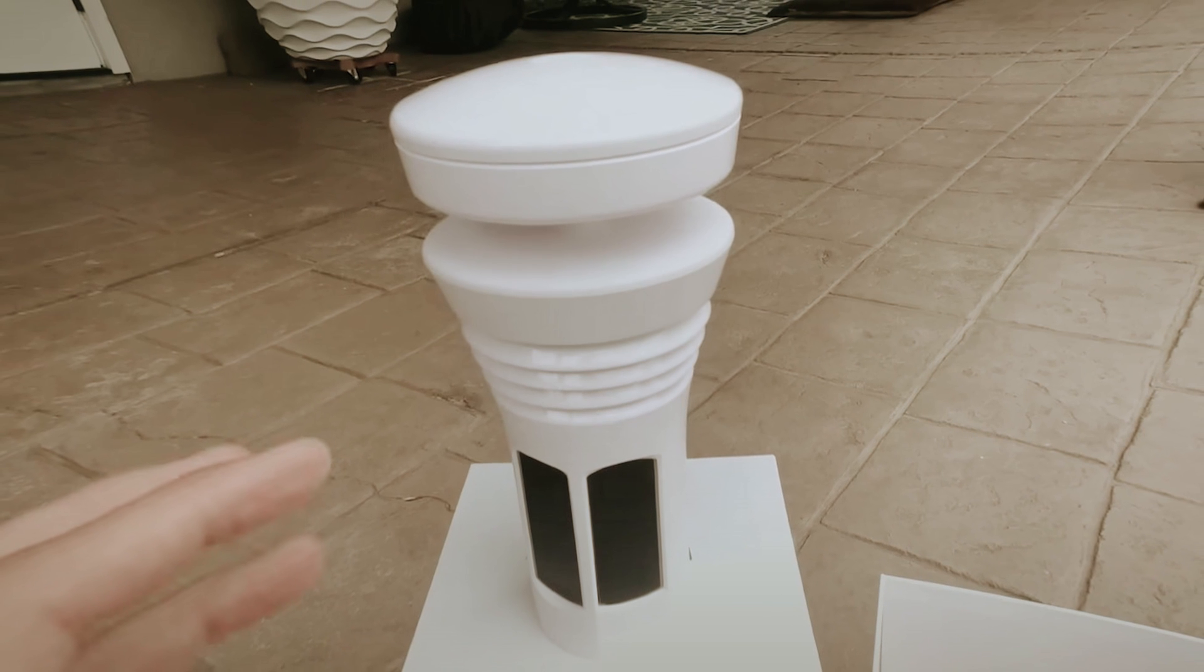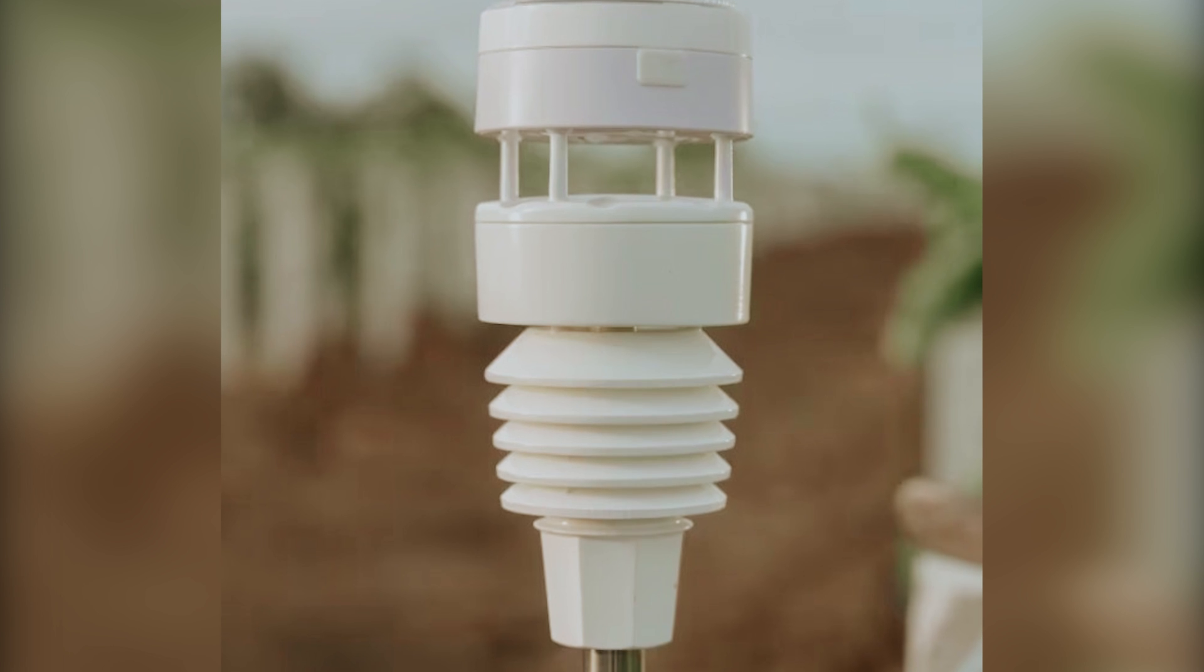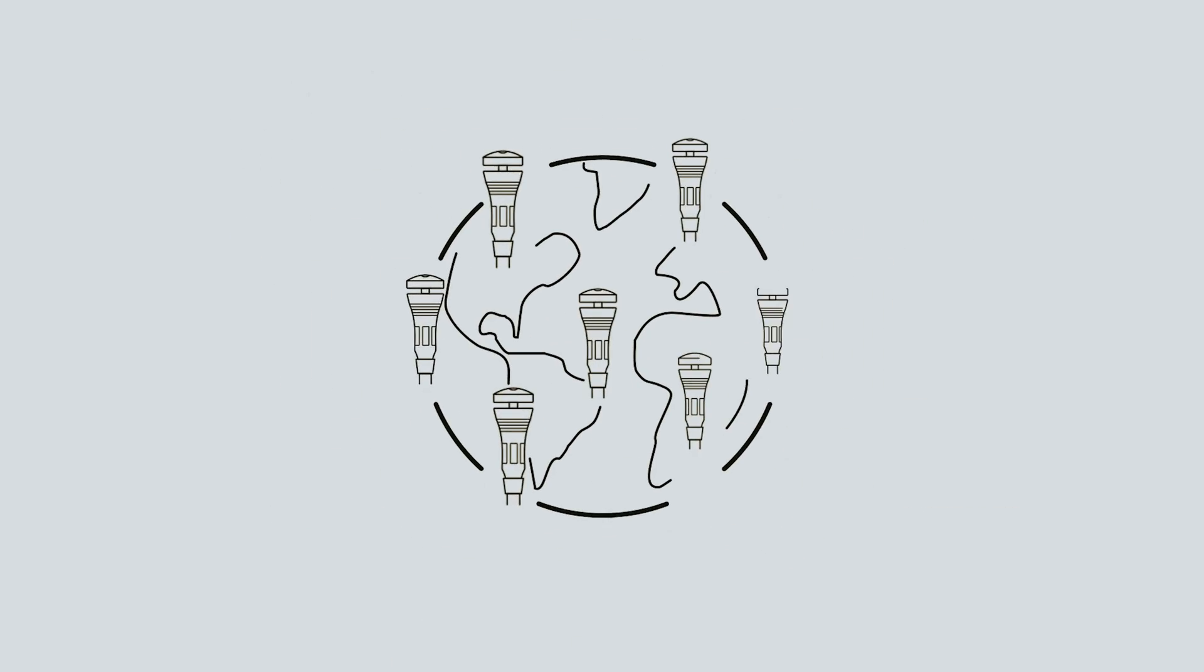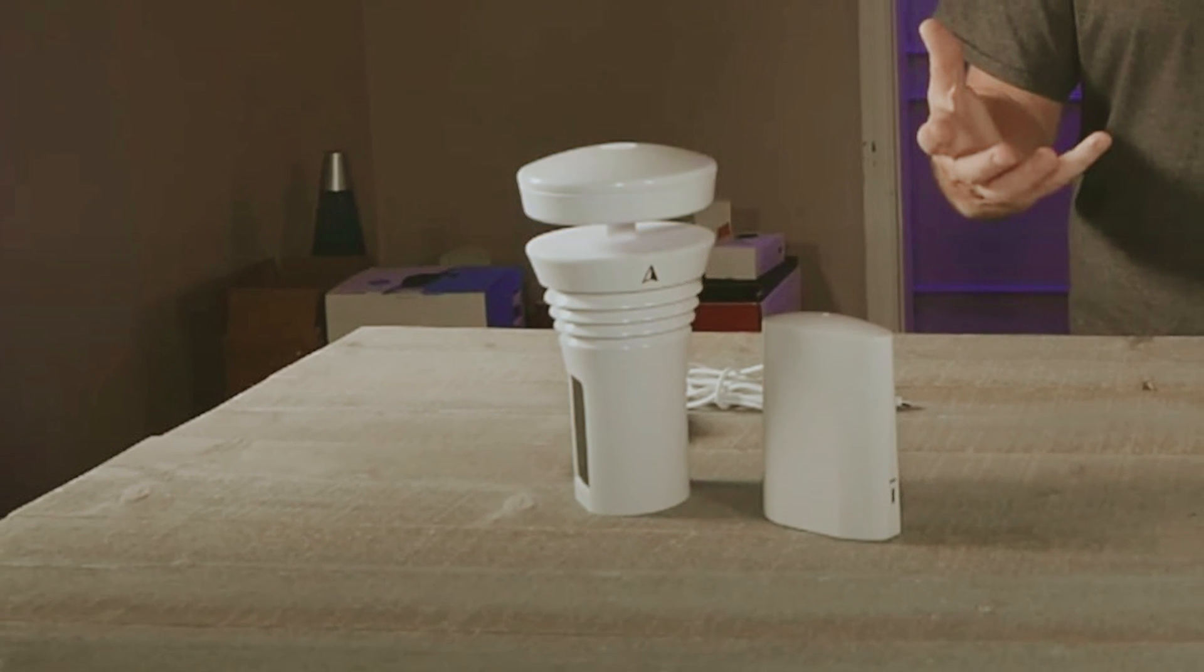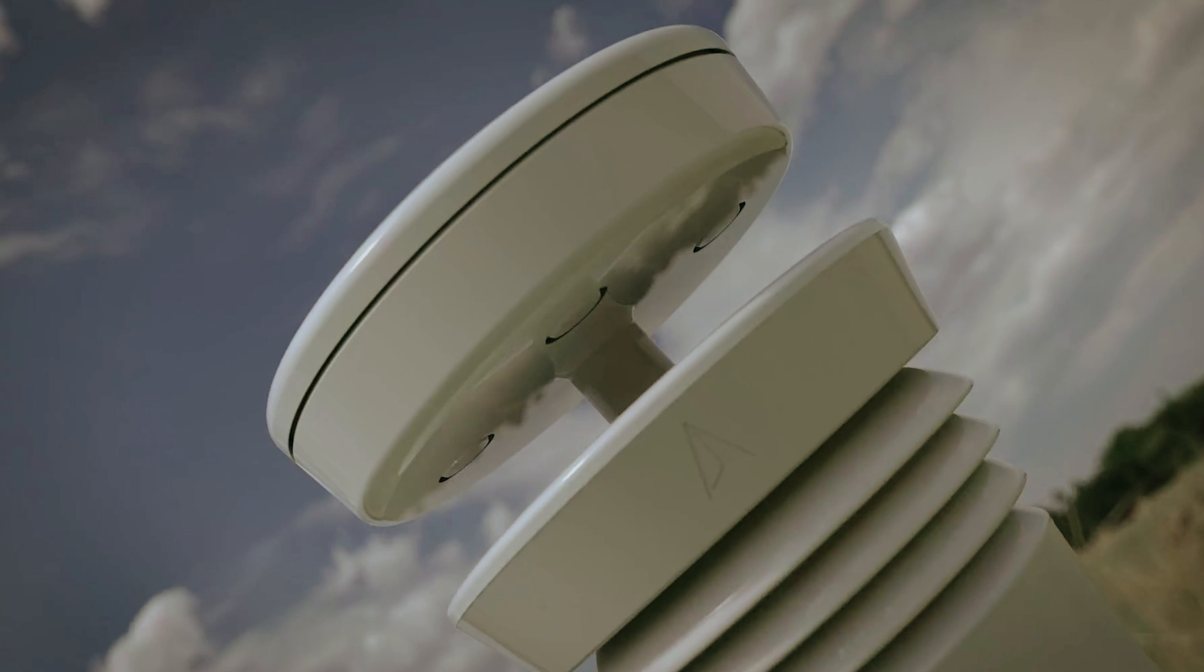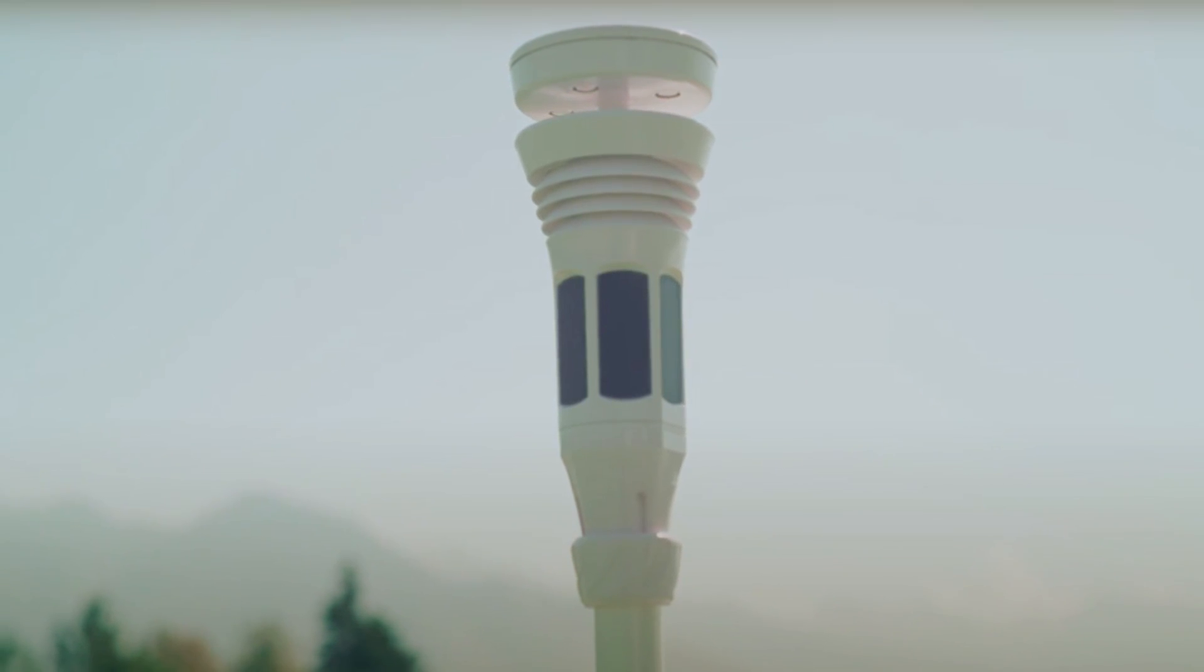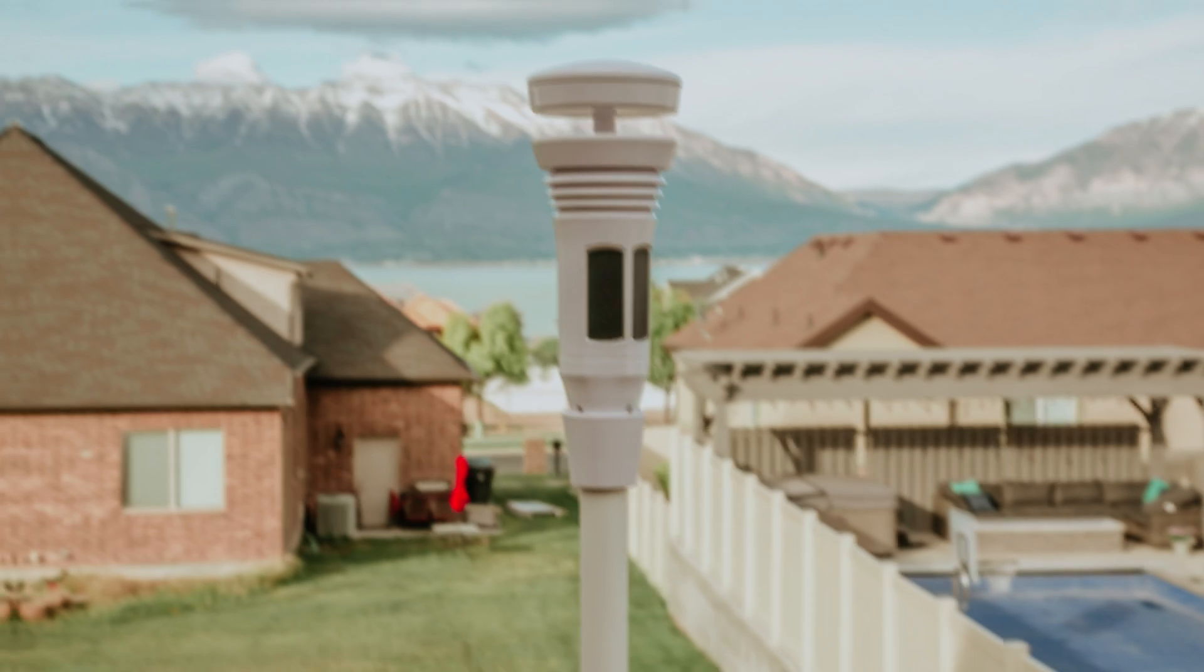What makes this unit even more appealing is its compatibility with smart home devices. You can easily integrate it with If This Then That, a popular smart home automation service, allowing you to create seamless connections with your existing devices. Imagine your home responding automatically to changes in weather, opening windows when it's sunny or adjusting your thermostat based on the temperature readings. While the haptic rain gauge may have some minor accuracy concerns, the overall performance of this weather station positions it among the best options available. By investing in this unit, you're not just getting a tool to measure weather conditions, but also a reliable partner that helps you make informed decisions about your day-to-day activities.